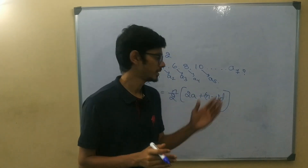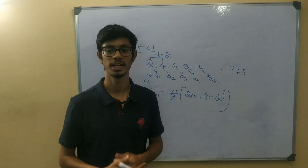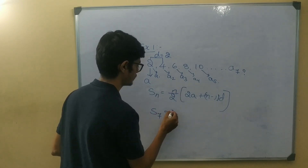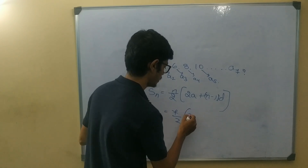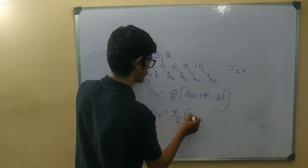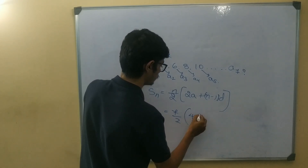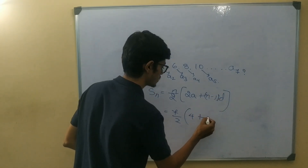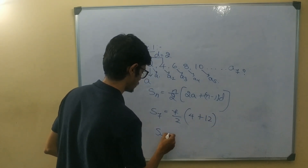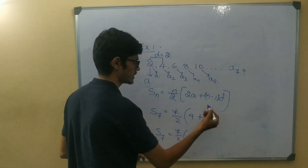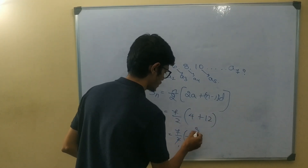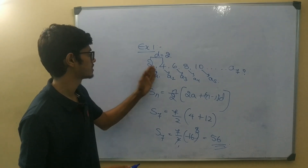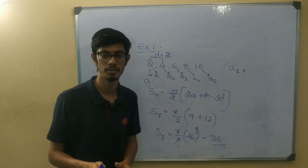Now if we want the sum of the first 7 terms, we use Sn equals n divided by 2 into 2a plus n minus 1 into d. So s7 equals 7 divided by 2 into 2 into 2 (which is 4), plus 7 minus 1 (which is 6), into d (which is 2), giving 6 into 2 equals 12. So s7 equals 7 by 2 into 4 plus 12 equals 7 by 2 into 16 equals 56. So the sum of all 7 terms — 2 plus 4 plus 6 plus 8 plus 10 plus 12 plus 14 — is 56.